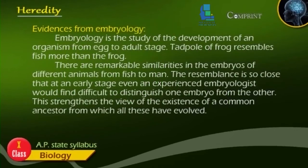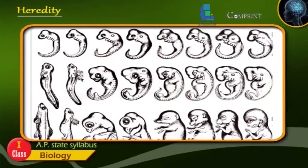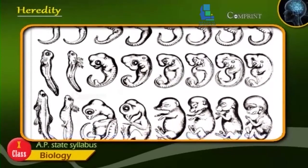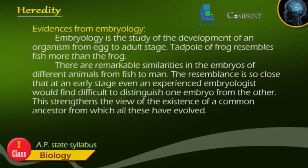Evidences from Embryology. Embryology is the study of the development of an organism from egg to adult stage. A tadpole or frog resembles a fish more than the adult frog. There are remarkable similarities in the embryos of different animals, from fish to man. The resemblance is so close that at an early stage even an experienced embryologist would find it difficult to distinguish one embryo from another. This strengthens the view of the existence of a common ancestor from which all these have evolved.